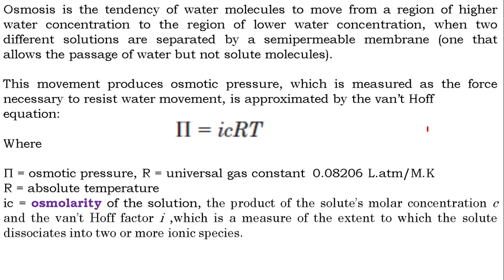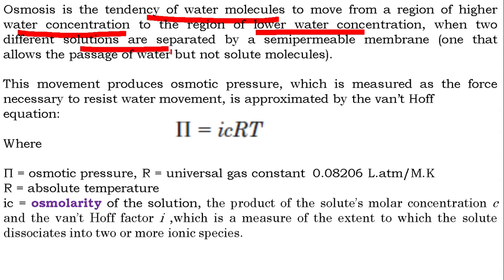What is osmosis? It is a tendency of water molecules to move from a region of their higher concentration to a region of lower concentration of water, when the two solutions are separated by a semi-permeable membrane. A membrane is semi-permeable when it permits the passage of solvent particles but not all particles. For osmosis: point one, a semi-permeable membrane must be present; and point two, there must be a differential concentration of solutes across the membrane — that is, a concentration gradient.